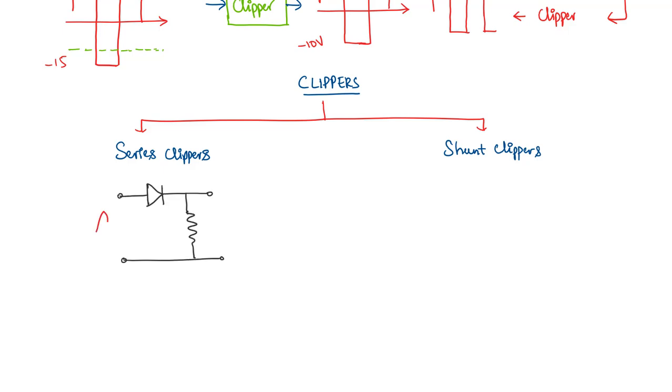When we gave a sinusoid input to the half wave rectifier, at the output, we got only the positive half of the wave. And this was half wave rectifier. In fact,